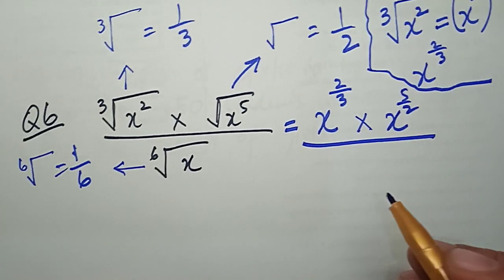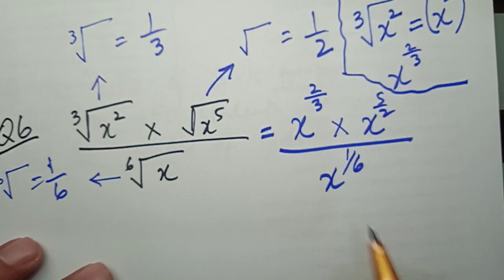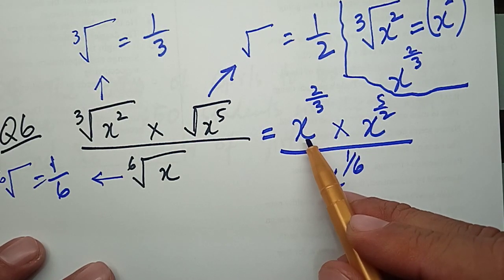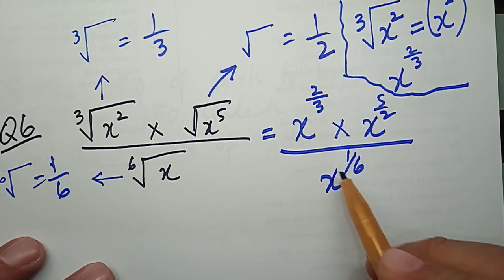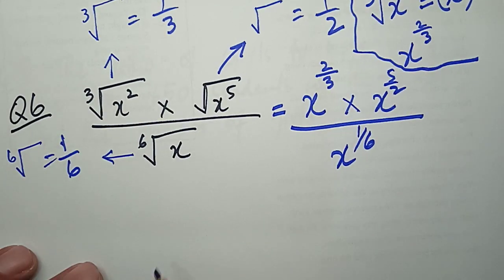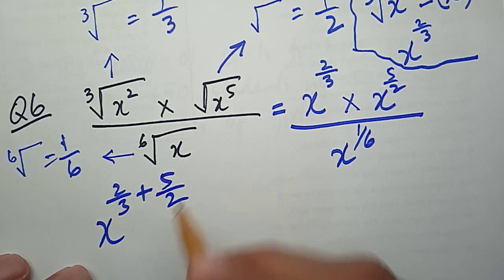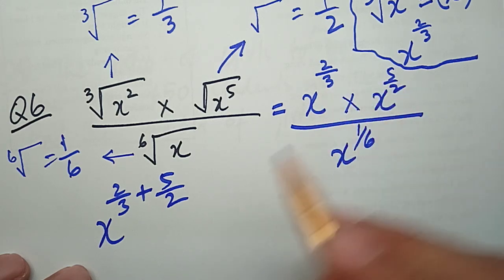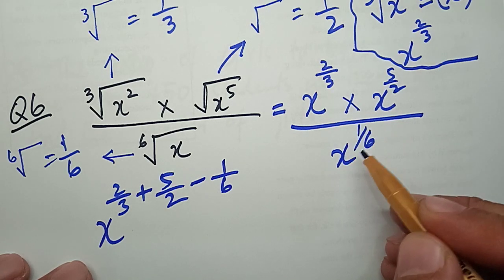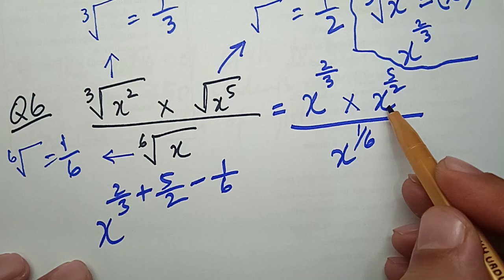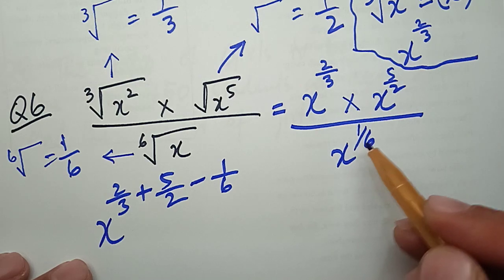Then we have X power 1 upon 6 in the denominator. Applying the same rule — when we have the same base multiplying, we add the powers; when we have division, we subtract the powers. So this is X power 2 upon 3 plus X power 5 upon 2, and then we subtract 1 upon 6, because it comes from the denominator side — it's a division, so we subtract the power.